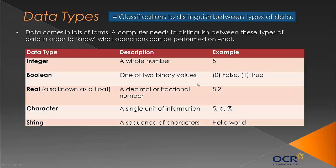A character is just a single unit of information - so 5, a, even a symbol like a percentage symbol. That's a character, and often this is put in single quotes, like in Python. And a string is just a sequence of these characters, like 'hello world' - that's probably one of the first things you've ever typed in code. It's usually what they teach you first, and it's again usually in apostrophes.